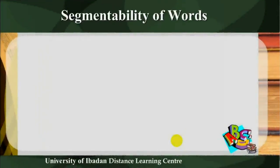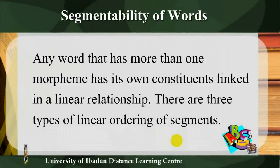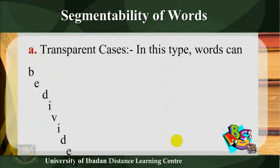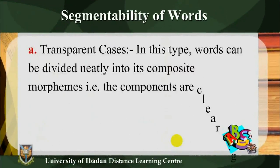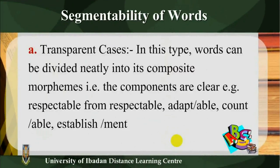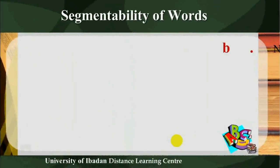Segmentability of words: any word that has more than one morpheme has its own constituents linked in a linear relationship. There are three types of linear ordering of segments. A: transparent cases — in this type, words can be divided neatly into their composite morphemes. The components are clear. Examples: respectable, adaptable, countable, establishment.